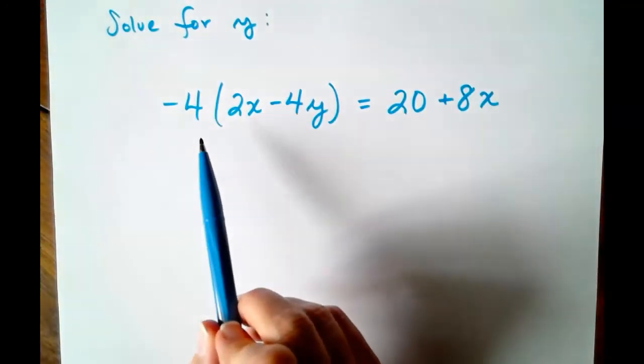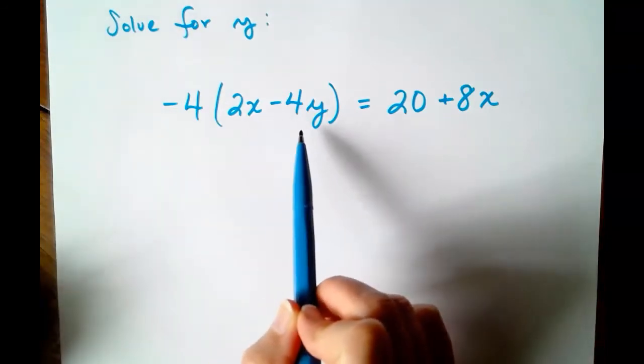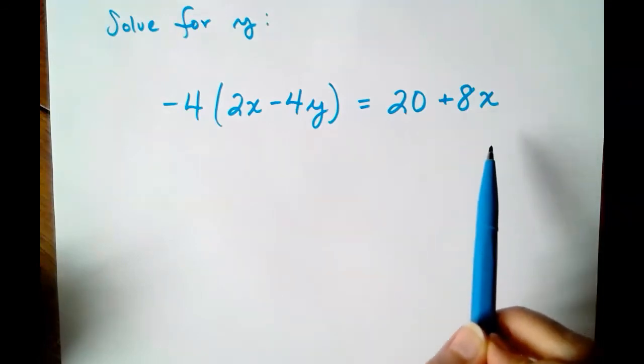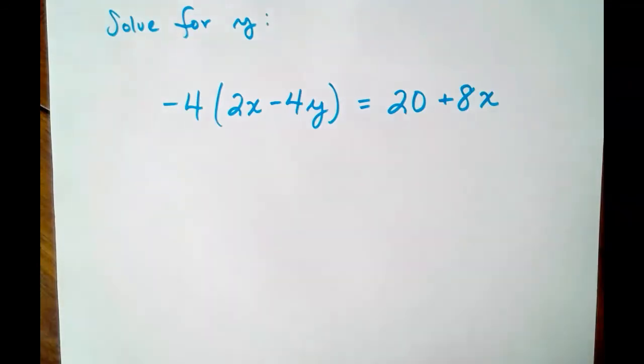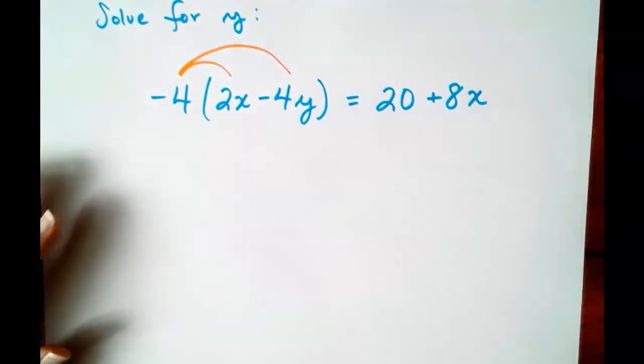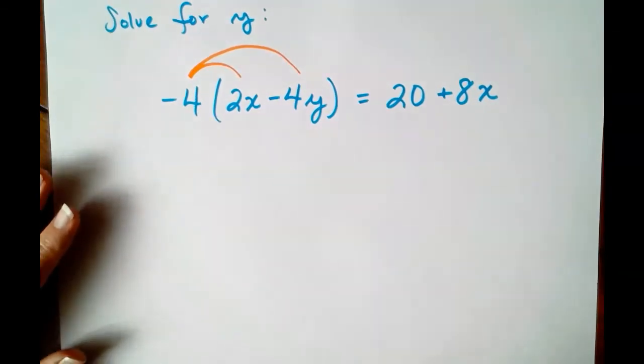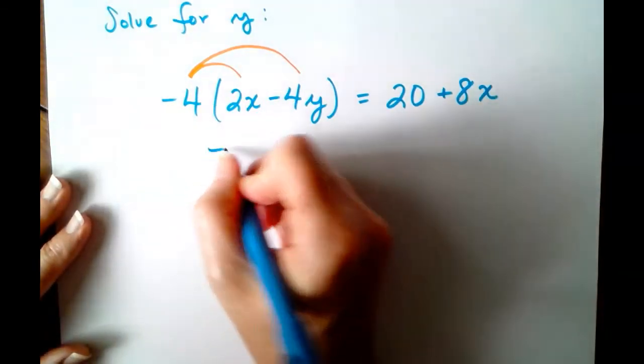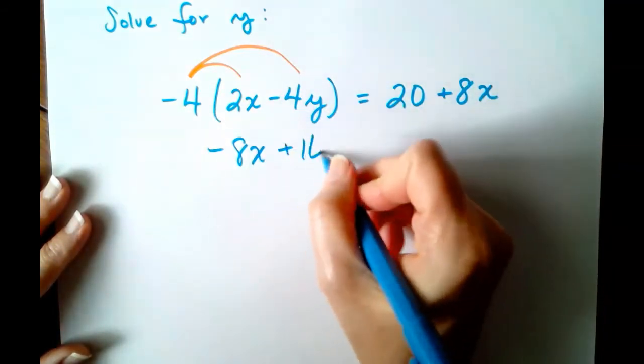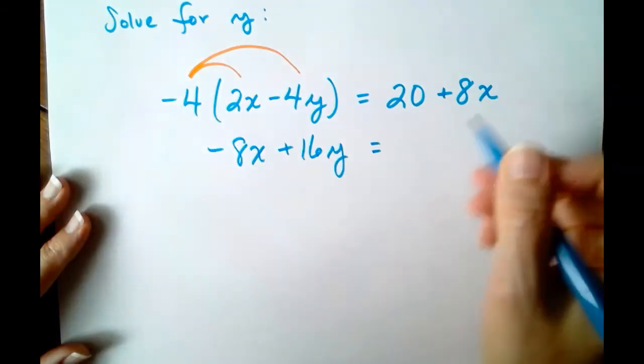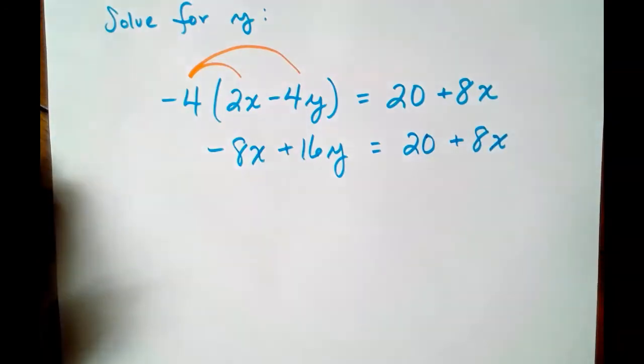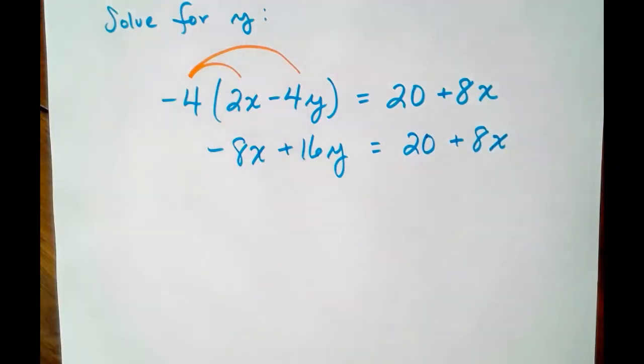Negative 4 times 2X minus 4Y equals 20 plus 8X. So the first thing we're going to do is distribute the negative 4 because we're following order of operations. So distribute the negative 4 and we get negative 8X. Negative 4 times negative 4Y plus 16Y equals 20 plus 8X. So from here, remember what we did on the last problem.